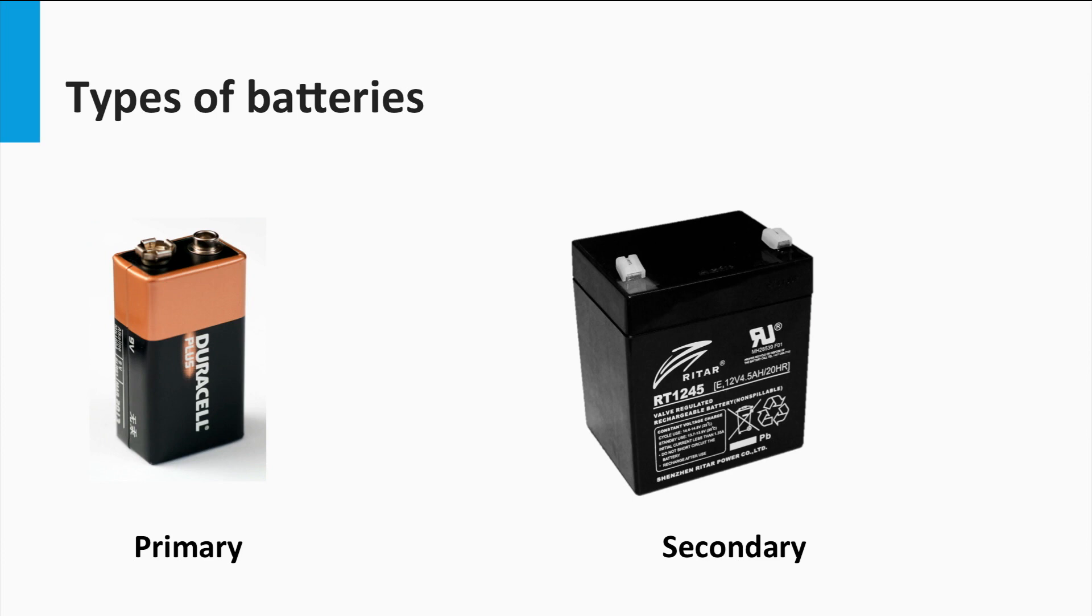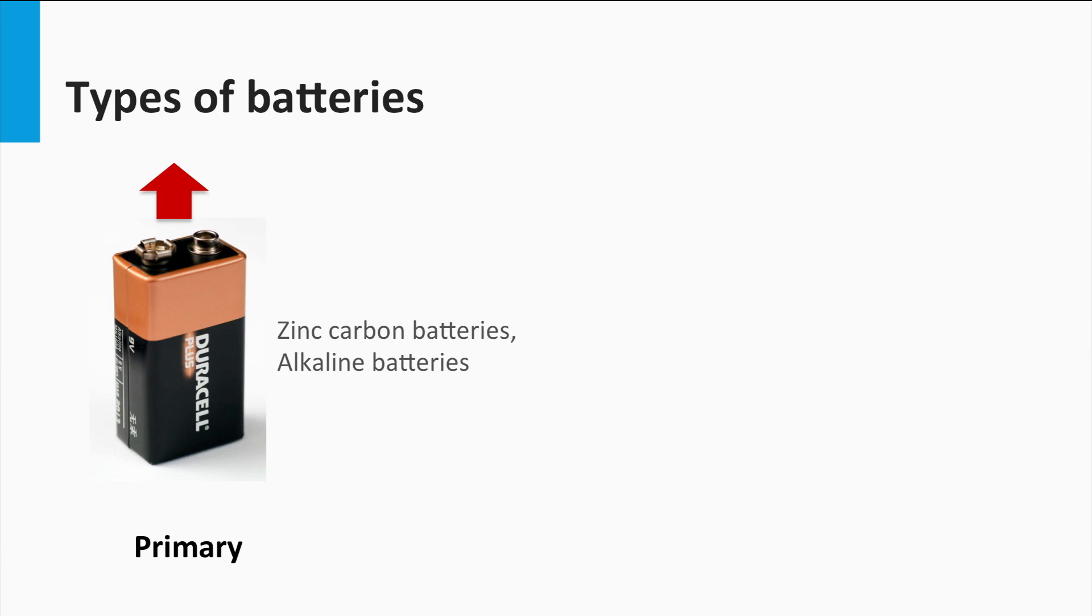Batteries are electrochemical devices that convert chemical energy into electrical energy. They are mainly classified as primary or secondary batteries. Primary batteries irreversibly convert chemical energy into electrical energy.